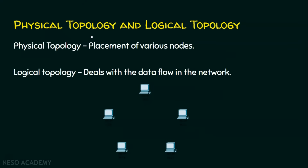Topology can be viewed as a physical topology and logical topology. Physical topology means where I am going to place all these nodes — say, I can place three nodes on the ground floor and two nodes on the first floor of my building. Logical topology means how the data is going to flow from one node to another, regardless of their physical placement.